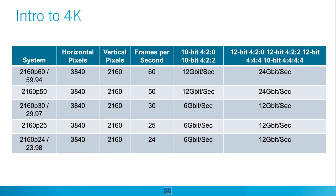This quality increase has a price. While carrying an uncompressed SD video signal requested a bandwidth of 270 Mbps, a 4K feed running at 60 frames per second now requires 12 GB — making the interface speed increased by a factor of 44.4.